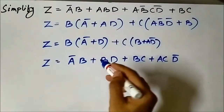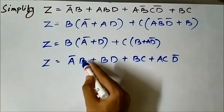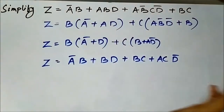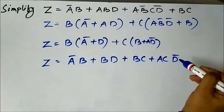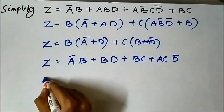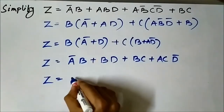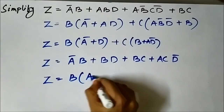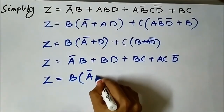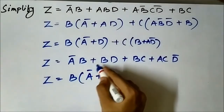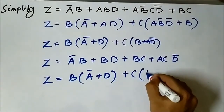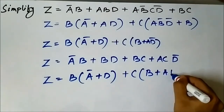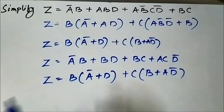Taking b common from the appropriate terms and c common from the remaining ones, with a·d̄ remaining, we can write it in an arranged way: b·(ā + d) + c·(b + a·d̄). This is the simplified version.